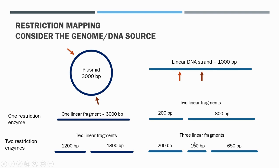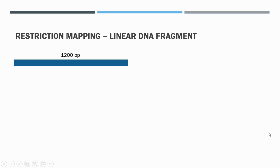I'd now like to explain restriction mapping, starting with mapping the position of restriction sites in a linear fragment of DNA, as this is easier to understand. We'll then move on to how this is done with a circular DNA fragment. In this scenario, we have a 1200 base pair fragment of DNA which is linear.